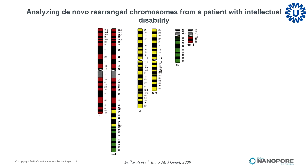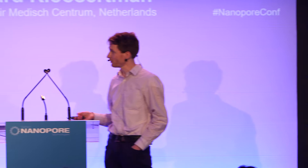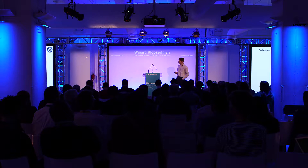We used this mate-pair technology, these jumping libraries, to sequence several human genomes with chromosomal rearrangements. At some point, we noted in our diagnostics laboratory some patients with an aberrant karyotype that you can just visually see under the microscope. We thought, let's apply this jumping library technique and see whether we can find more than you just see with your bare eyes under the microscope.